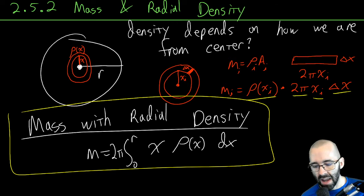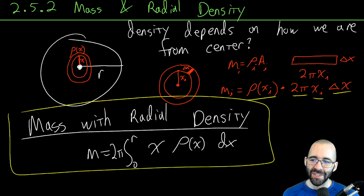That's how we can find the mass of something with radial density. It's kind of funny - I don't want to confuse you, but we have washers here but the integral really looks like the shell method.